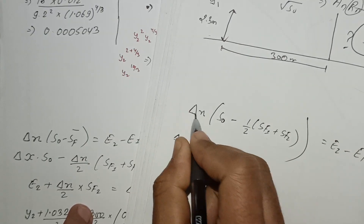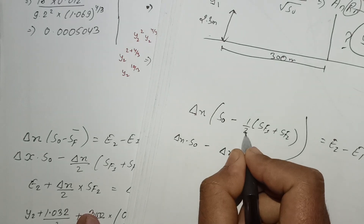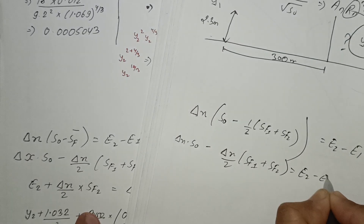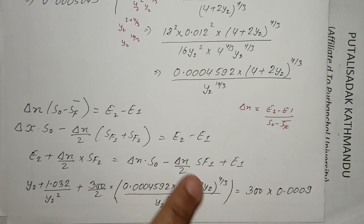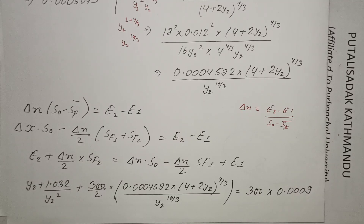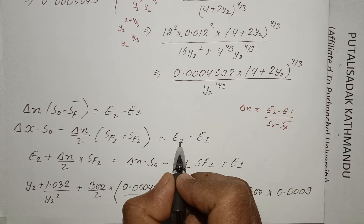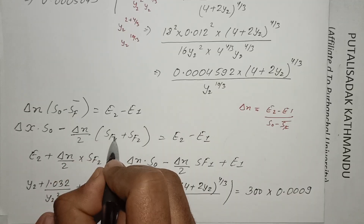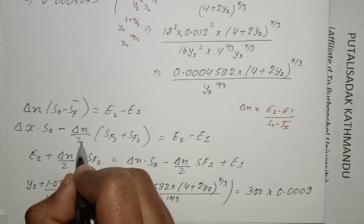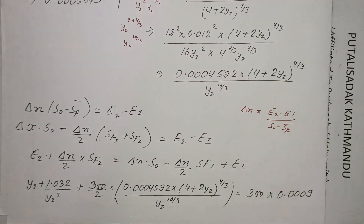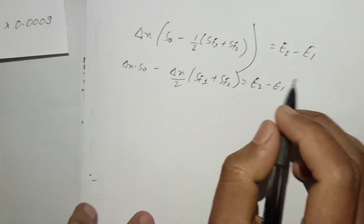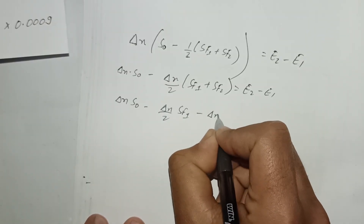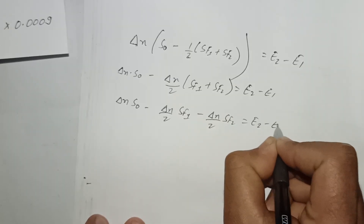E2 is equal to E1 for the energy balance. The direct step method gives delta-x divided by 2. The formula is: delta-x divided by 2 minus delta-x divided by 2 equals E2 minus E1, rearranged to solve for the distance delta-x between sections.